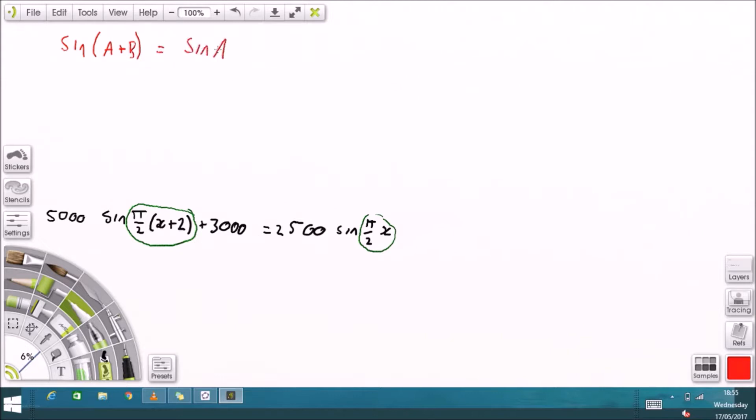So I'm going to have to do something to this angle on the left using the compound angle formula. I know that sin(A + B) is equal to sin(A)cos(B) plus sin(B)cos(A). For me, A is π over 2x and B is π.